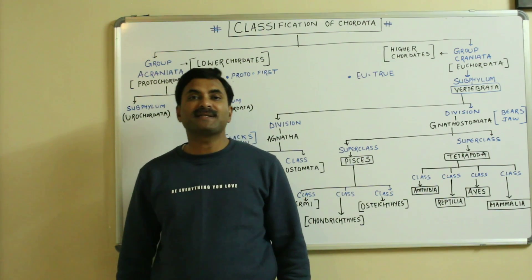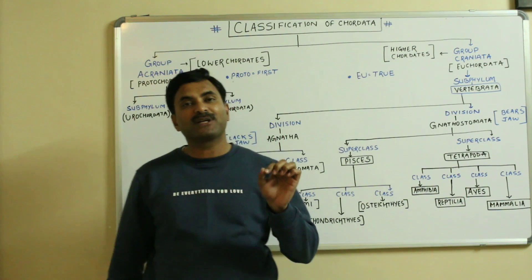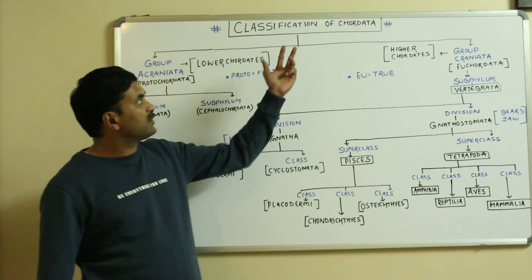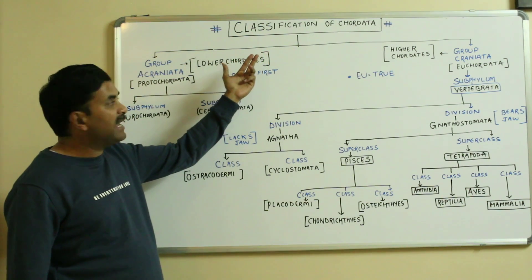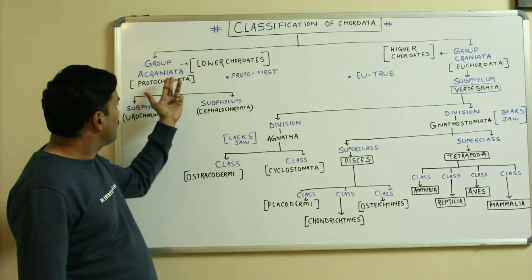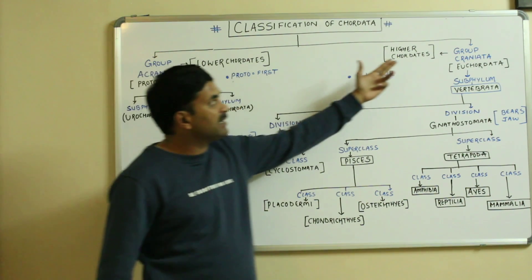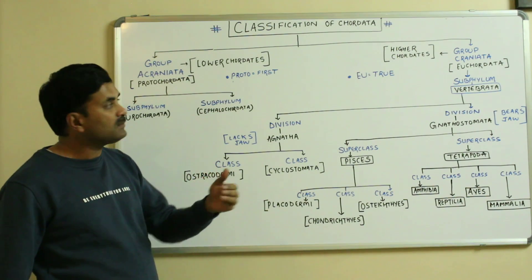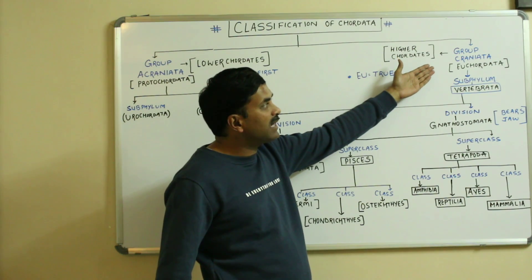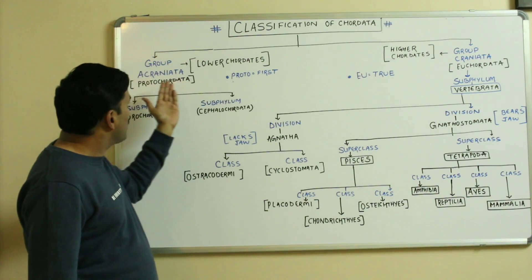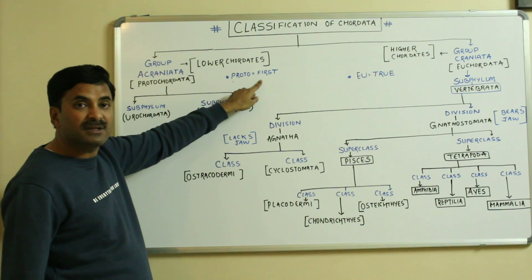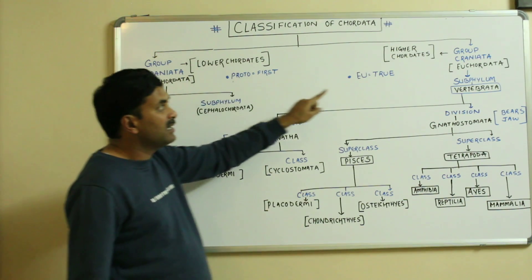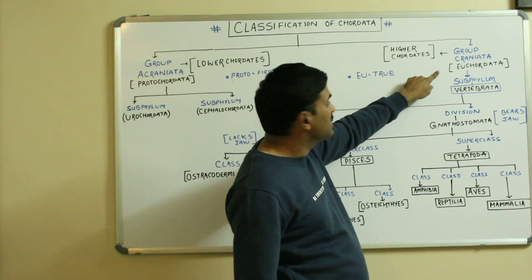Hello, today we are going to discuss the outline sketch of the classification of the chordates. They have been divided into two major groups: one is known as the Acraniata and another is known as the Craniata. Acraniata means those which do not have the cranium, and Craniata means those which have the cranium. They are also called Protochordates — proto means first, meaning they were the primitive chordates — and the Craniata are also called Euchordates, meaning true chordates.